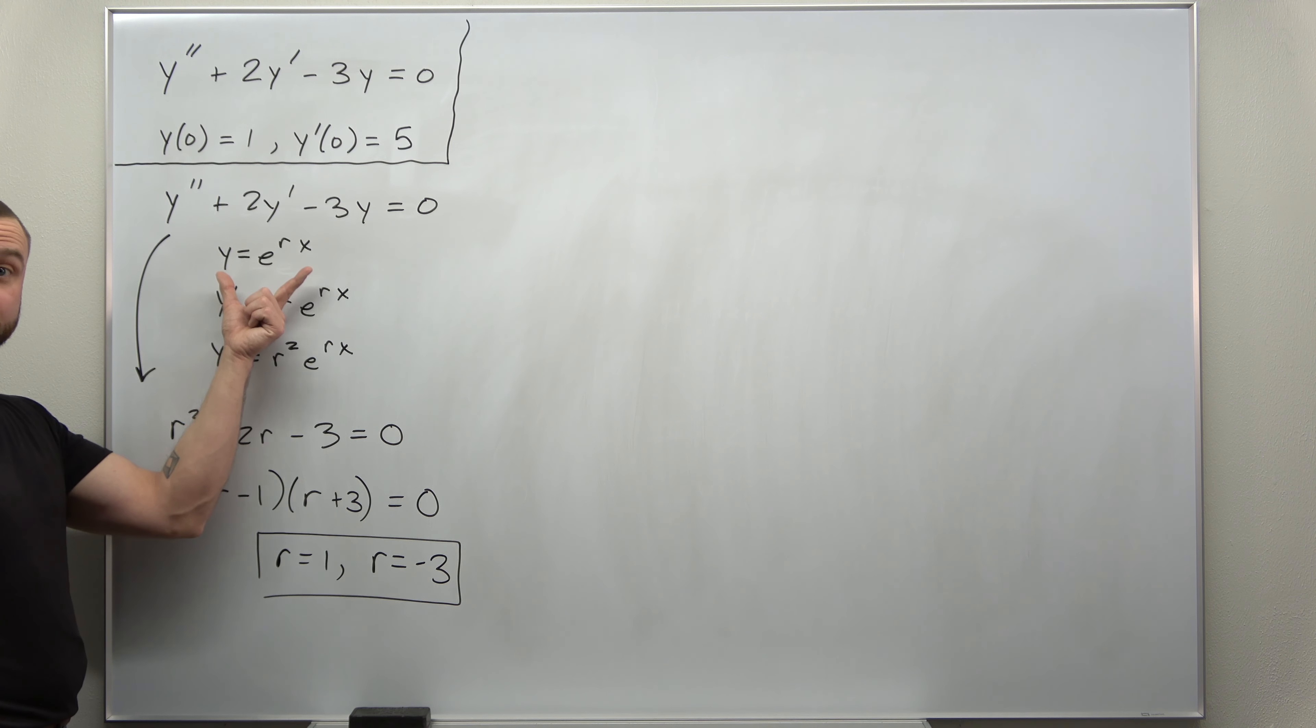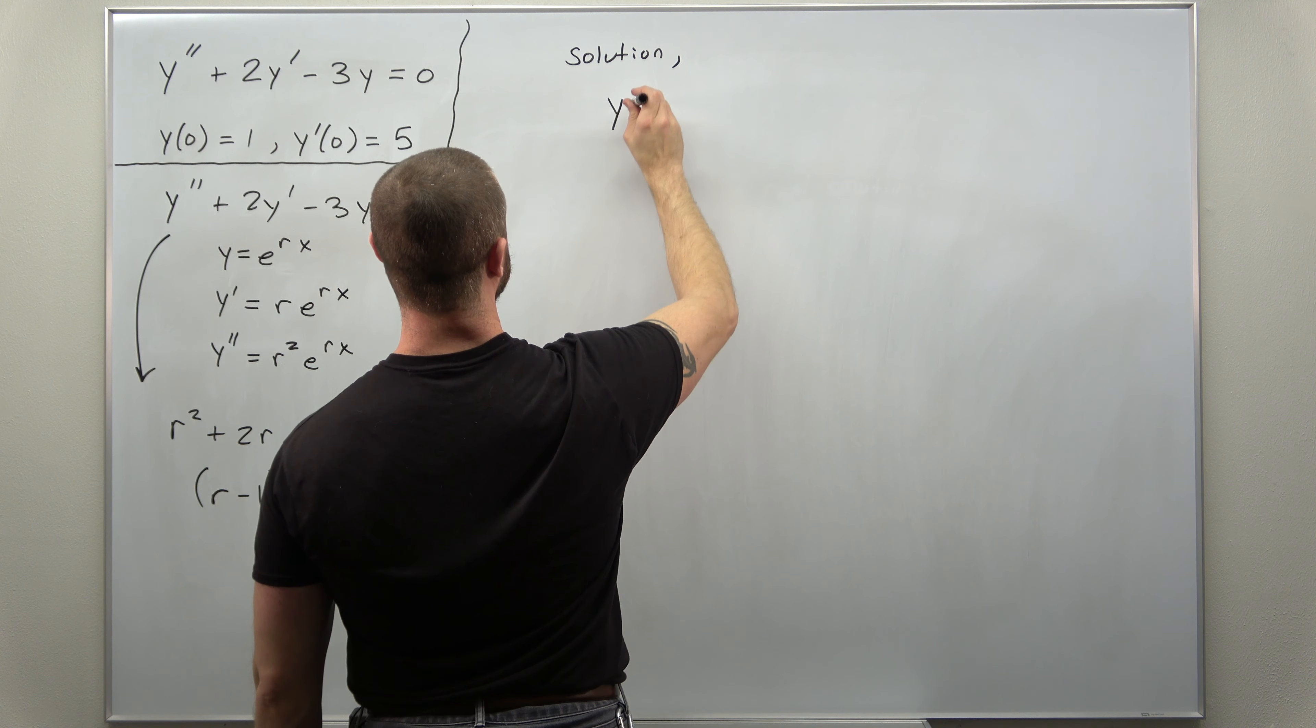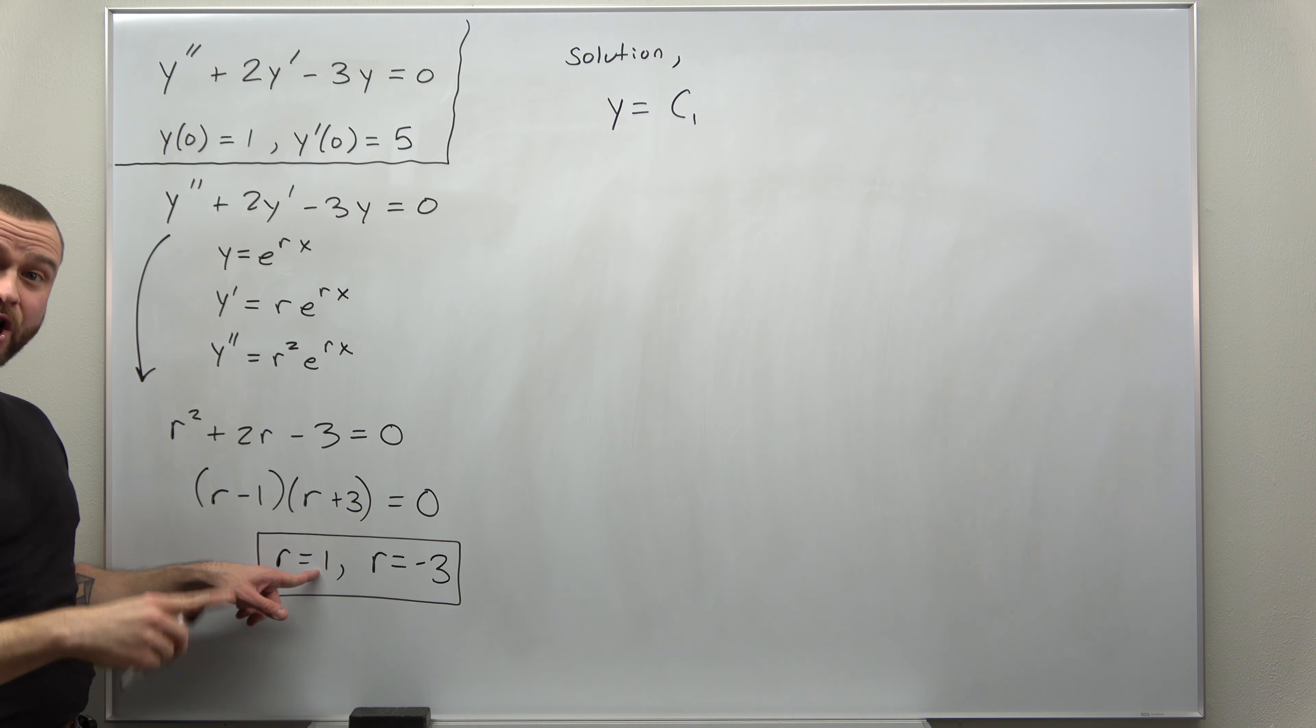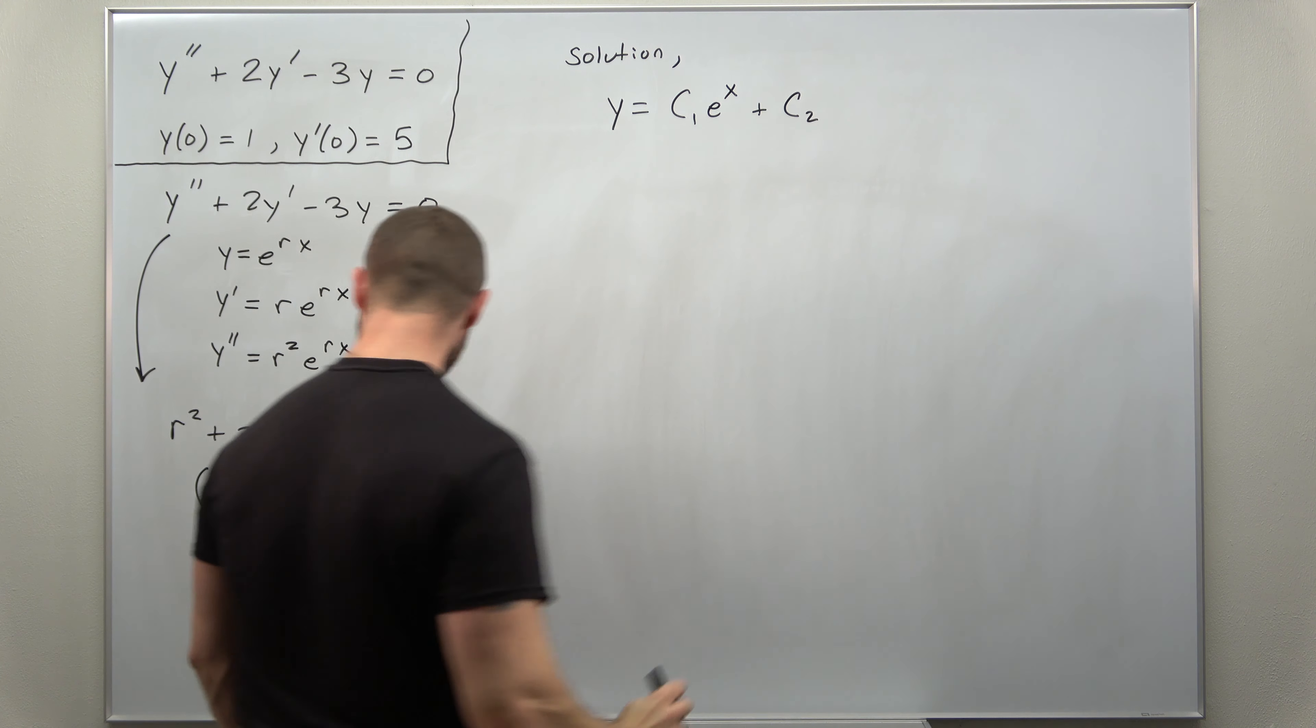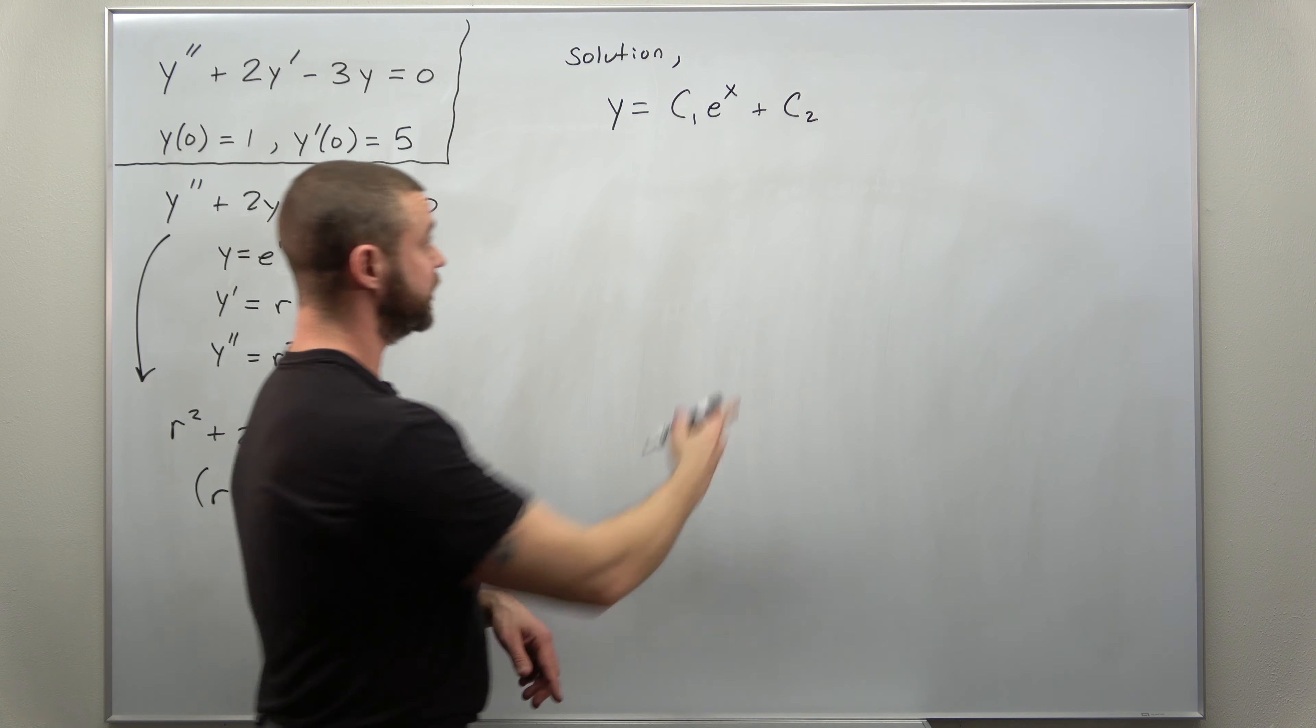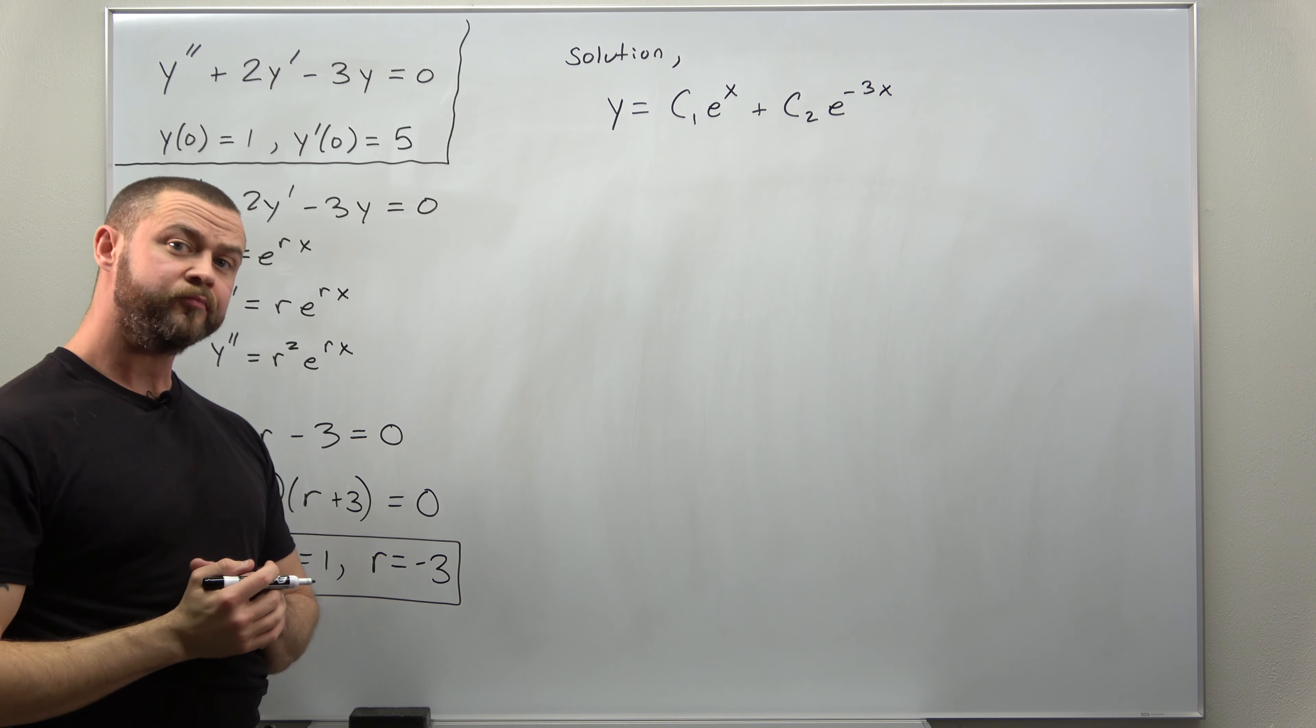And each value of r gives you an exponential function as a solution. So we get our solution here with two arbitrary constants. This is going to look like c1 times e to the rx where r here is going to take it as 1, so c1 e to the x. And then we get another exponential function where the value of r is now negative 3, so c2 times e to the negative 3x.